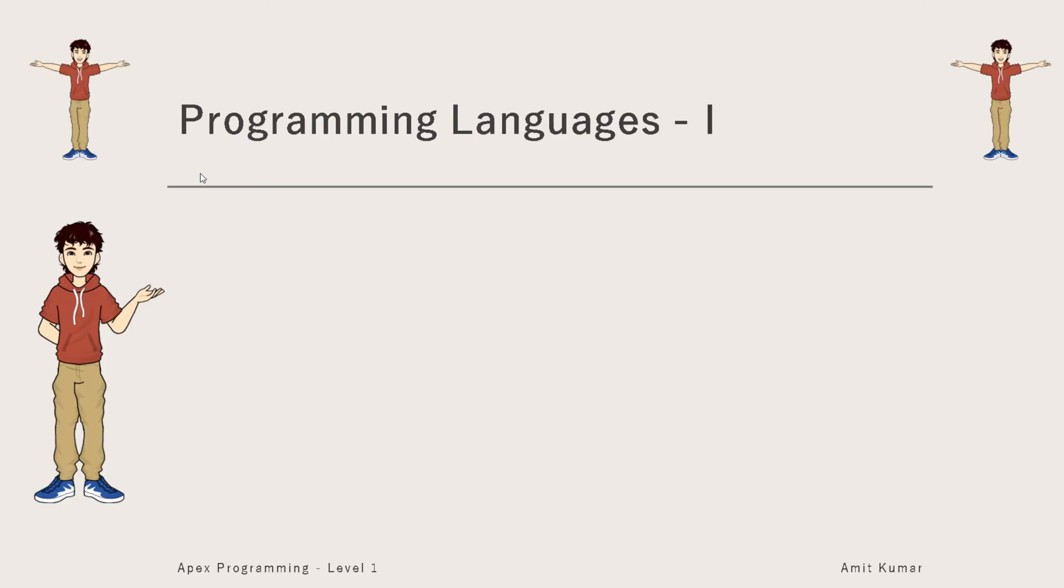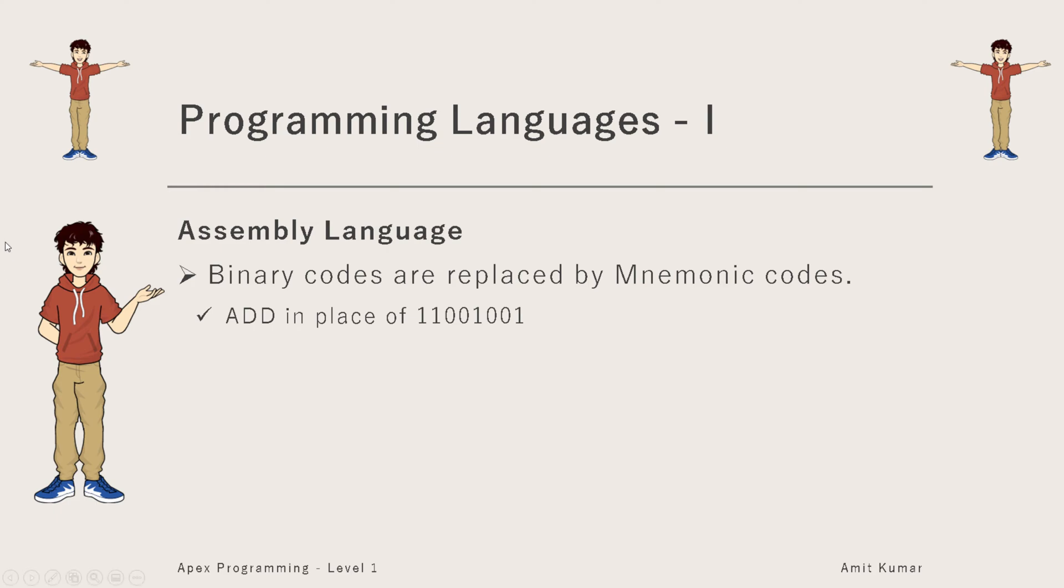Now as we know, we humans try to find out the easiest way to do the hardest thing, so we invented a new language known as assembly language. What we did is we replaced all the binary codes with mnemonic codes. Now what are mnemonic codes? In simplest terms, mnemonic codes are nothing but three to four letter alphanumeric codes, like here you can see ADD.